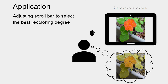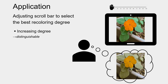We have developed an application for CVD users to choose the proper CVD degree for the best recoloring result. The user, supposed to be with a certain degree of CVD, will perceive the input image like this. The user then adjusts the scroll bar and the difference between flowers and leaves becomes much more distinguishable.